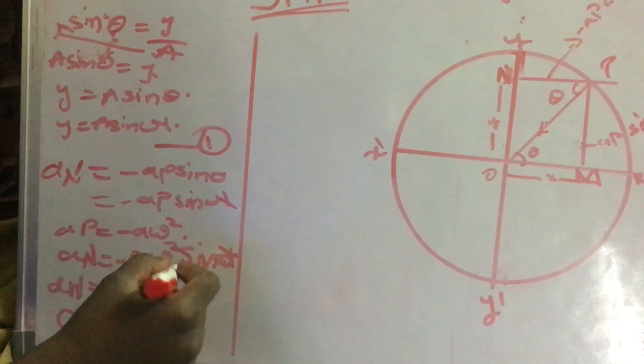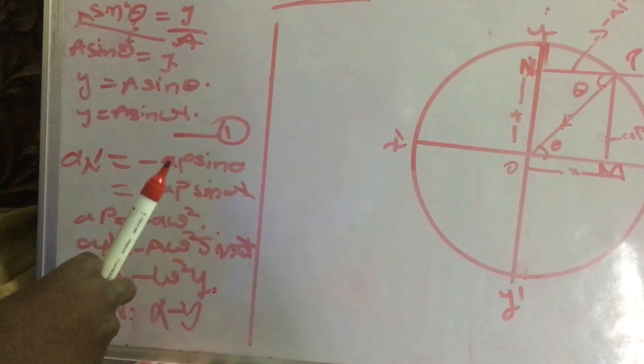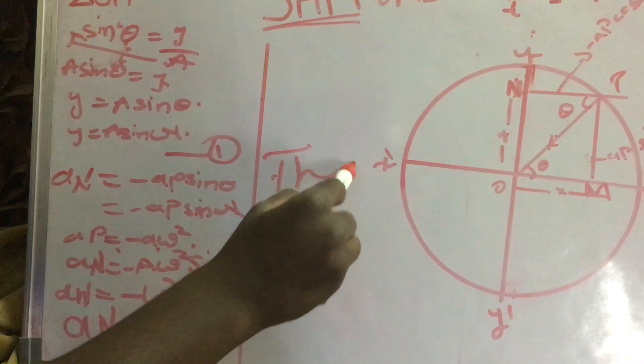How are you thinking here omega square? Because I have taken AN also as A here, AP also I have taken as omega. Therefore, I have taken here omega as AN also, so I have completed this. Hence, this is SHM.